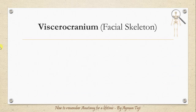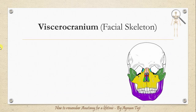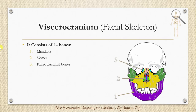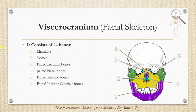The viscerocranium, which consists of bones of the face that develop from the pharyngeal arches in embryologic development, includes the following 14 bones: the mandible, the vomer, paired lacrimal bones, paired nasal bones, paired palatine bones, paired inferior conchi bones, paired maxillary bones, and paired zygomatic bones.